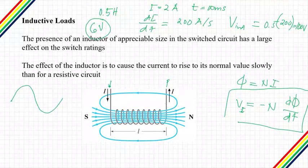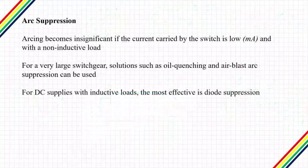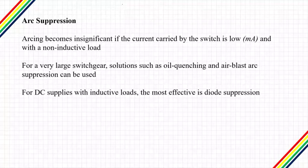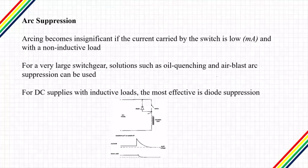This value of 100 volts is comparatively small, but if the circuit is rated at only 6 volts DC, then the presence of 100 volts across the switch contacts will cause a considerably greater amount of arcing. Arcing becomes insignificant if the current carried by the switch is low — probably at milliamperes level — and with a non-inductive load. But when dealing with DC supplies and inductive loads, arc suppression cannot be neglected. For this type of circuit, the most effective method of arc suppression is diode suppression, as shown in the diagram.